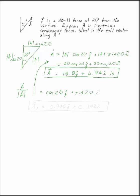That is the unit vector of A. So the unit vector is 0.940 J plus 0.342 I, and that does not have units. The units are in the magnitude.